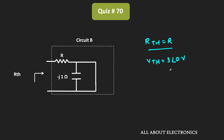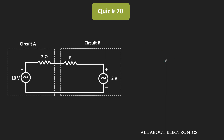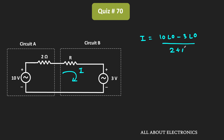Now we can replace circuit B by its Thevenin equivalent circuit. Looking at the overall circuit, let the current flowing be I. We can say that this current I is equal to (10V - 3V) divided by (2 + R), which gives I = 7 / (2 + R).